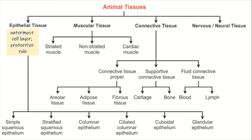The epithelial tissue is the outermost cell layer and also has a protective role. We have different types of epithelial tissue according to their cell shape. Next, we have the muscular tissue — we have different types such as striated, non-striated, and the cardiac muscle. These are responsible for various forms of movement.